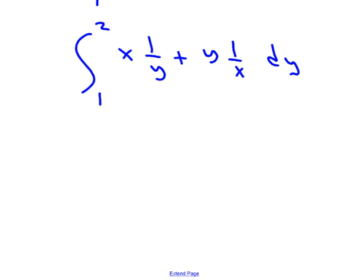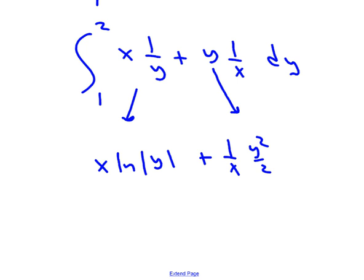All right, so we're going to do our anti-derivatives here. This first one, if y is the variable, that means x times ln, the absolute value of y. The anti-derivative 1 over y is ln y. And then over here, 1 over x is kind of like your coefficient, and the anti-derivative of that y term is y squared over 2. So 1 over x times y squared over 2. And this whole thing is getting evaluated between 1 and 2.